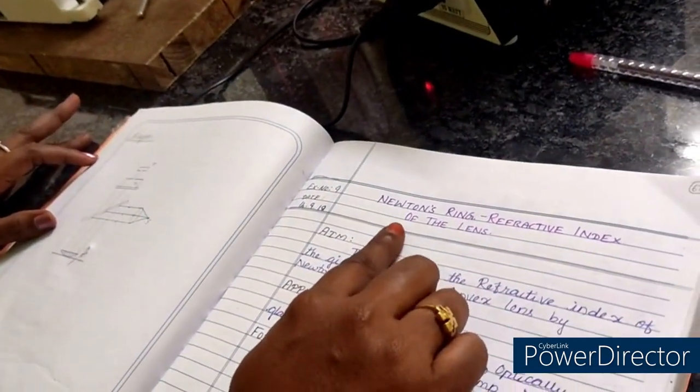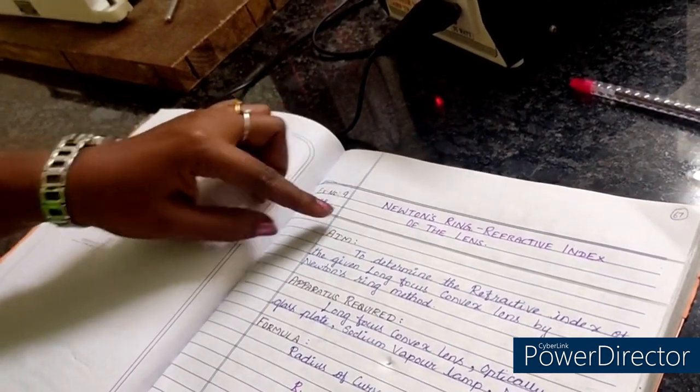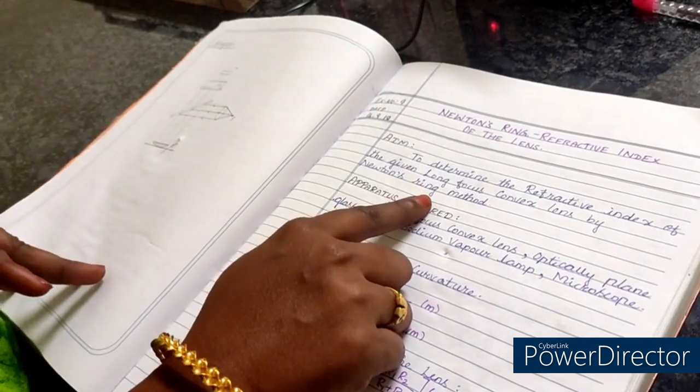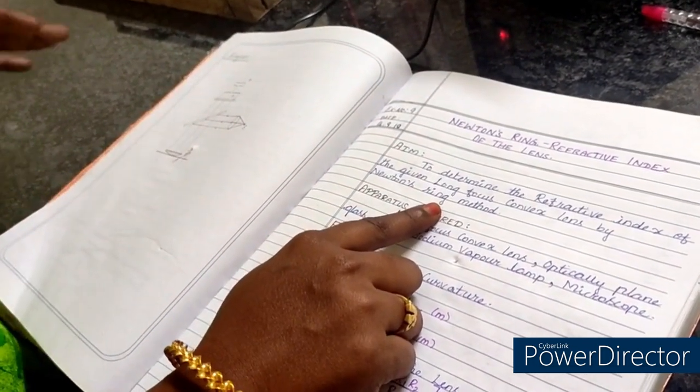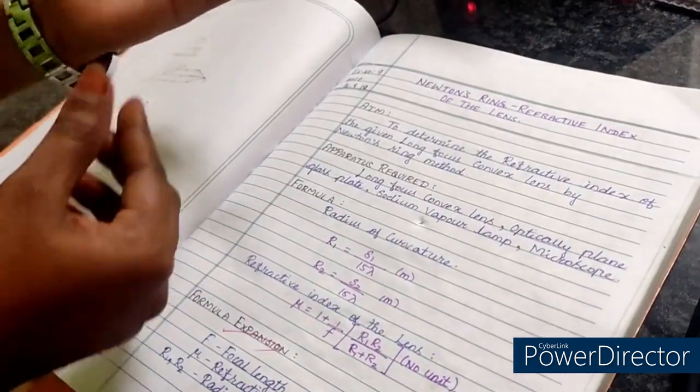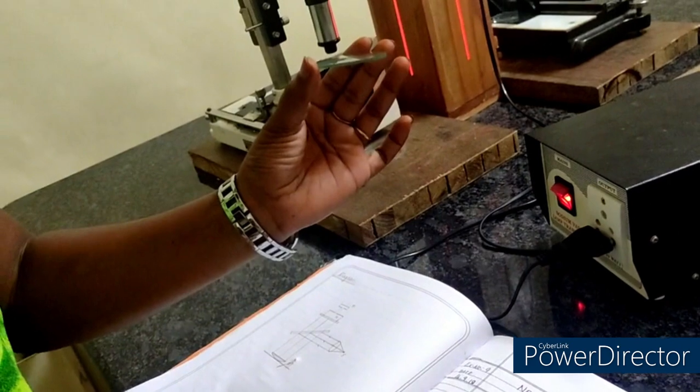Today we are going to see the Newton rings refractive index of the lens experiment. First we have to know the aim of this experiment, that is to determine the refractive index of the given long focus convex lens which is placed here. We have to find out the refractive index of this given lens.